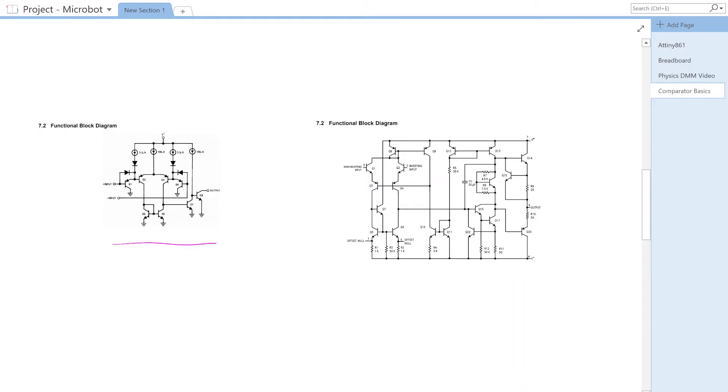There's a bunch of other reasons, one of which is the output of a comparator can have different configurations. Let's jump into the basic block diagram of the comparator, which is the one here on the left, and this is the block diagram of the 741 op amp.